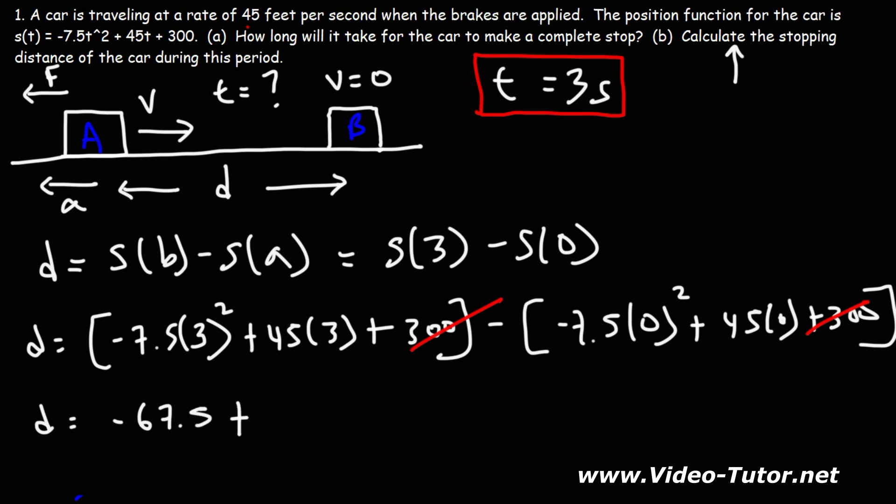45 times 3, that's 135. And this part is 0. So we just have this now. Negative 67.5 plus 135 is positive 67.5.